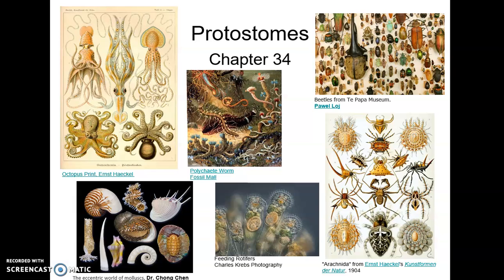Here are some examples of protostomes: worms, rotifers, mollusks like bivalves and cephalopods, and arthropods like arachnids and insects are all protostomes. In fact, the majority of animals are protostomes.